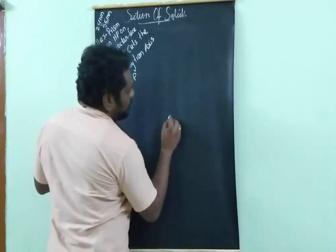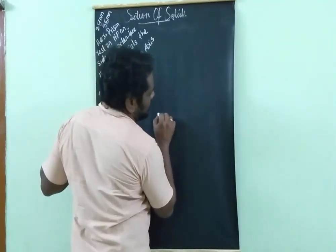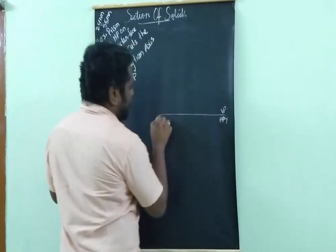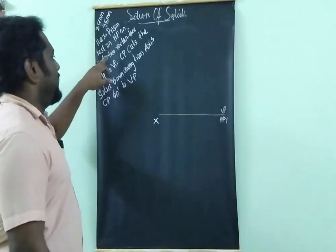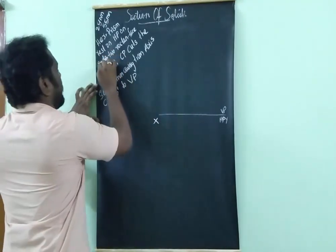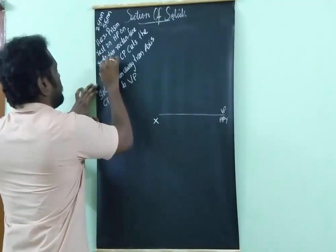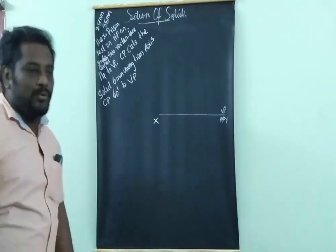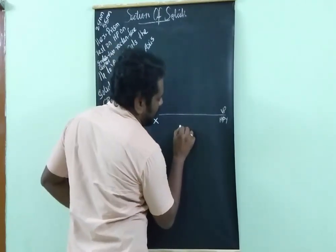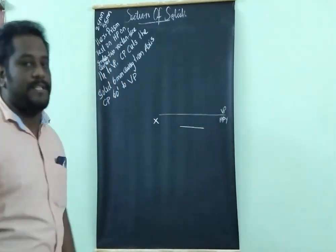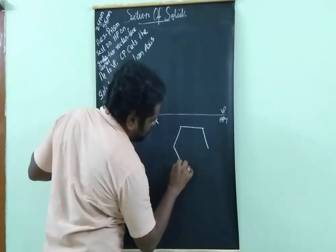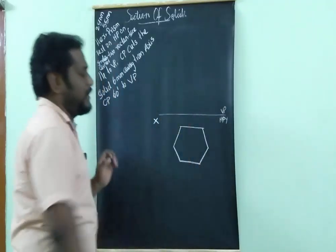I have to draw the hexagon like this. This is my XY line — VP and HP. The condition given is that it is resting on a corner with two rectangular faces parallel to VP. So if a rectangular face is parallel to VP, you have to draw a line first, then draw the hexagon. This is your hexagon.